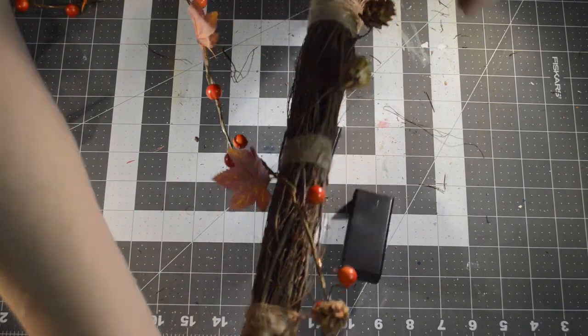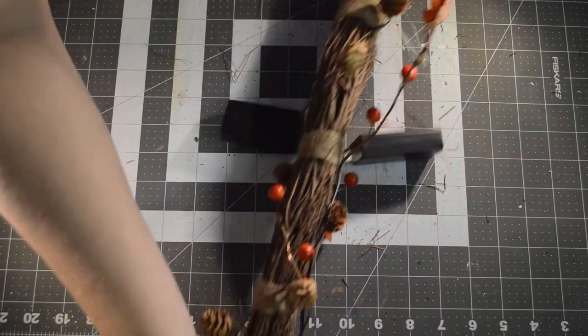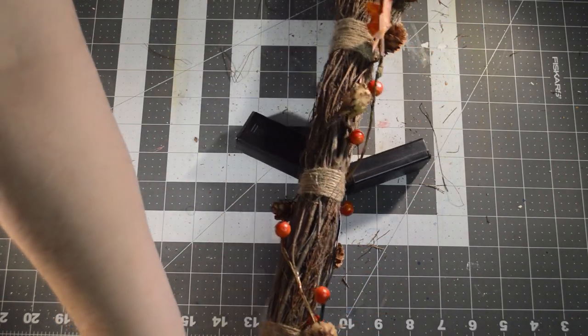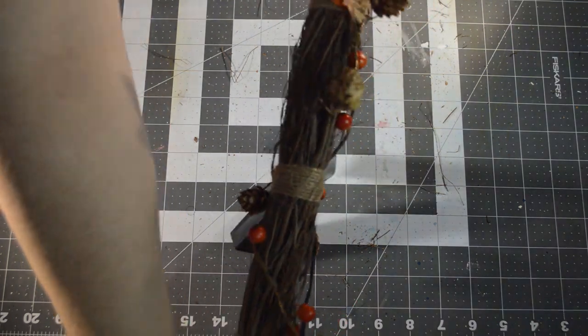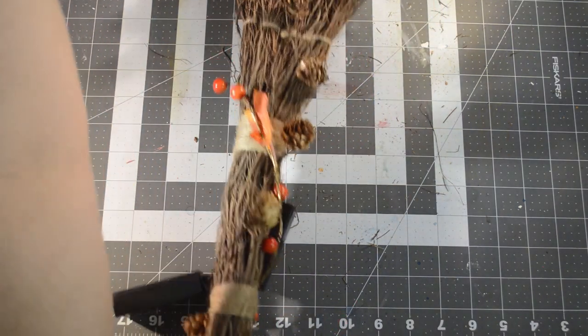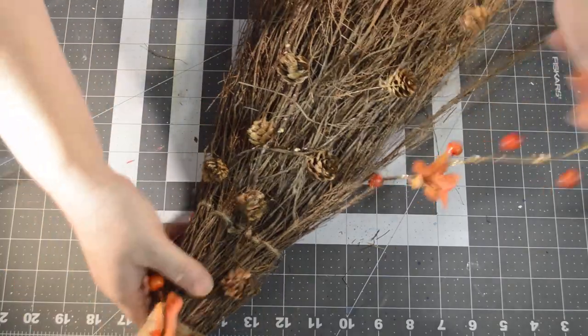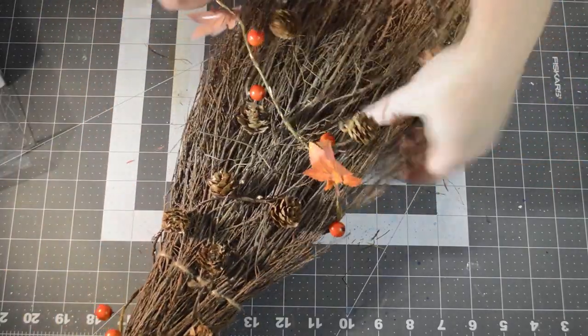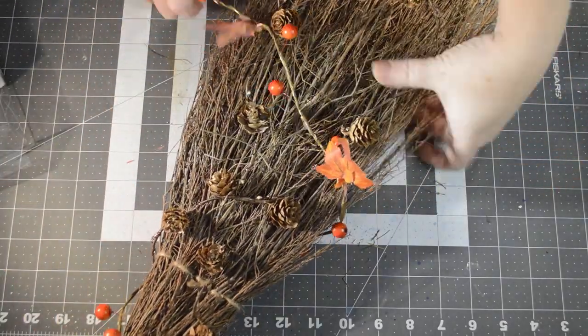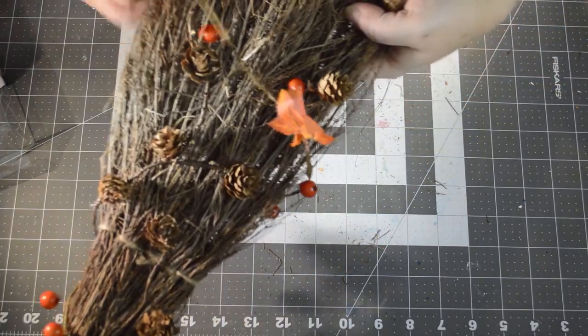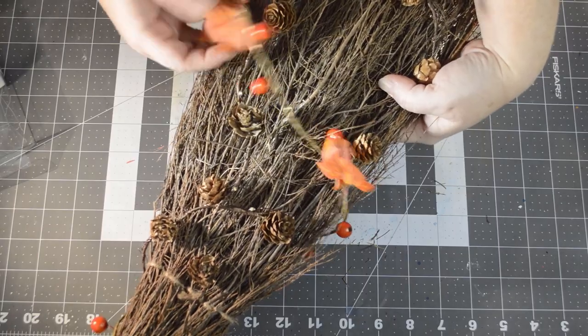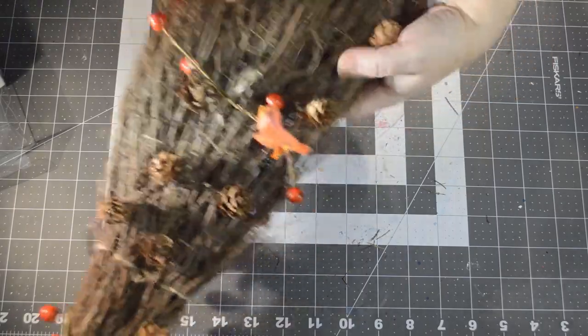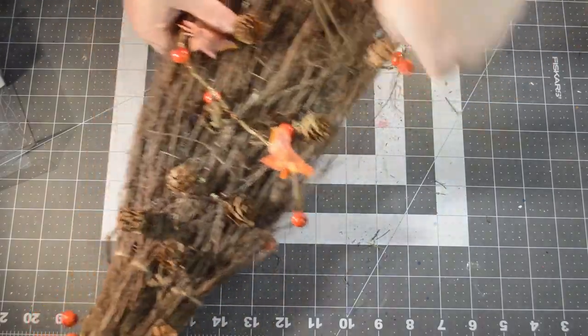Once you get that all wrapped around the top part of the broom, we're just going to arrange them again on the bottom part of the broom with the pine cones to look pretty, and then we're going to just take the end of this wire and tuck it right into the side of the broom so that it is hidden.